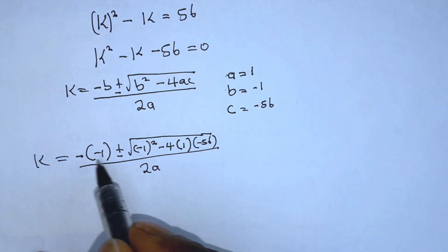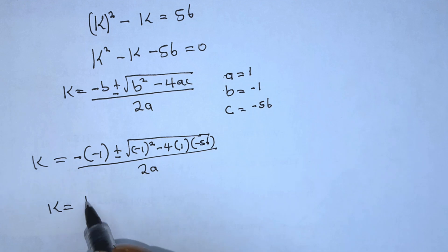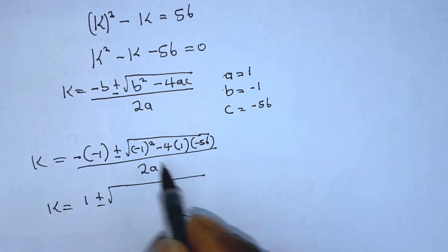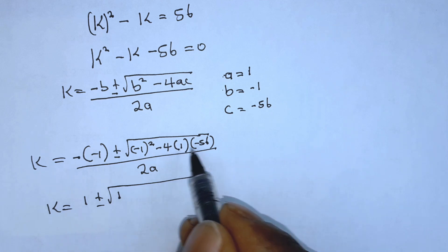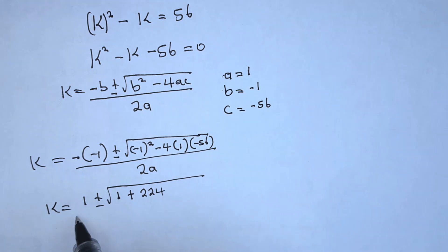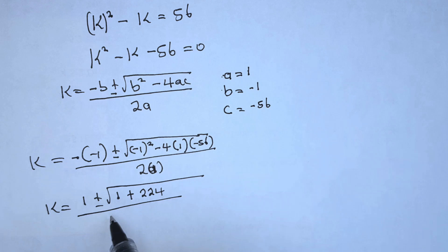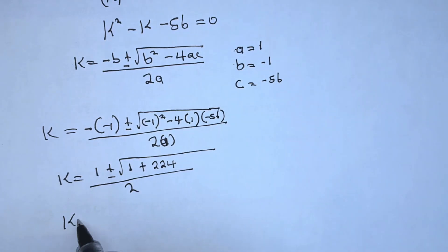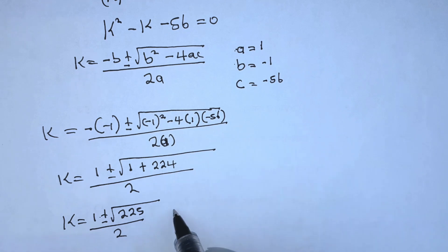Simplifying: negative times negative gives positive 1. Inside the square root: negative 1 squared is 1, minus 4 times 1 is negative 4, and negative 4 times negative 56 gives positive 224. So we have 1 plus or minus the square root of 1 plus 224, which equals 225, all over 2.